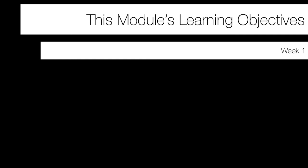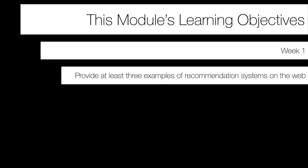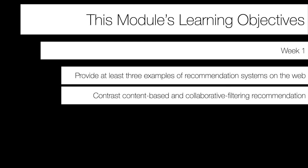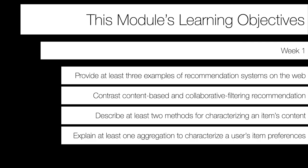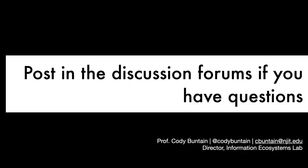That concludes what I wanted to cover introducing recommendation systems, collaborative filtering, and content-based recommendation. You should now have several examples of recommendation systems on the web, be able to explain major differences between content-based and collaborative filtering-based recommendations, describe methods for characterizing content via actors, text, product descriptions, or cuisine types, and explain how to aggregate a user's preferences using simple averages, weighted averages, and normalization methods. If you have any questions, feel free to post in the discussion forum.